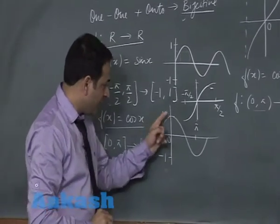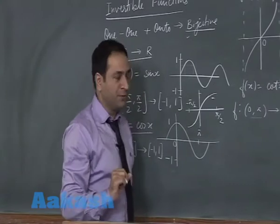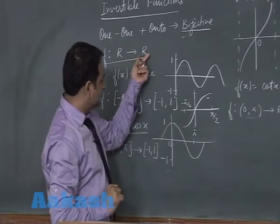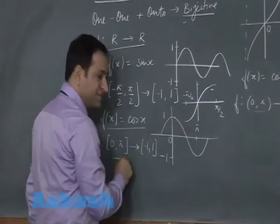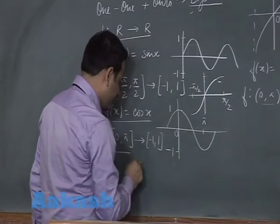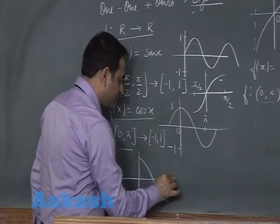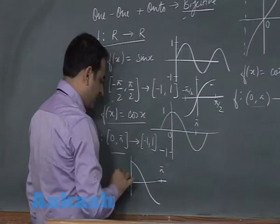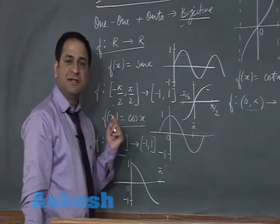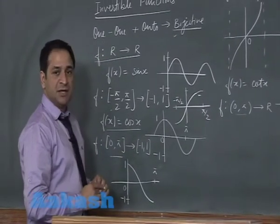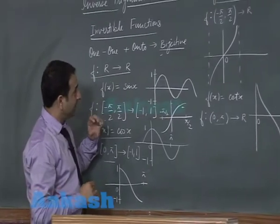Similarly, look at cosec x again. When defined from R to R, its range is minus 1 to 1 but the codomain is R, so codomain does not equal range. We change the domain — setting it from 0 to π — and under this setting the graph is restricted. The range then becomes equal to the codomain of minus 1 to 1, so the inverse now exists — this function is invertible. So all these functions can now become invertible. The complication is that we have to work in a different domain and codomain equal to the range of the function.